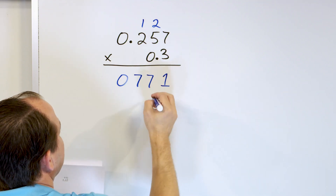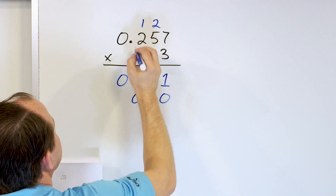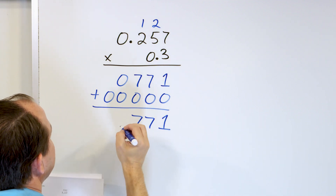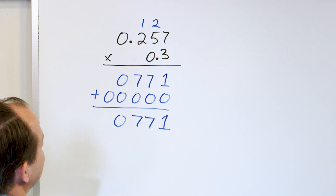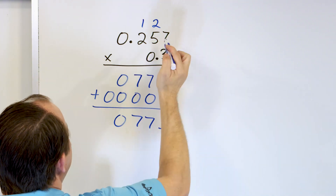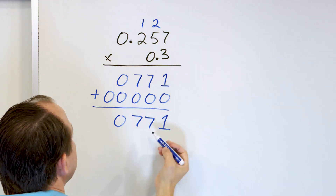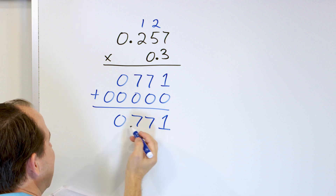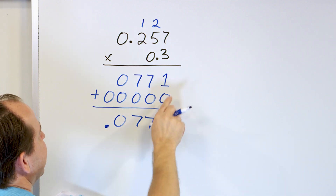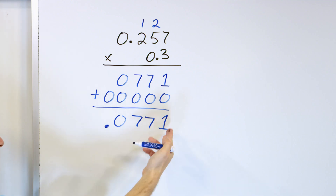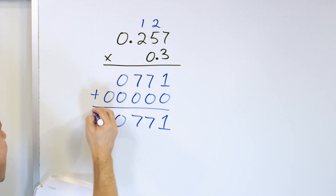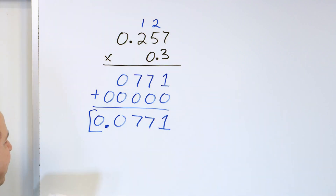Then I drop a 0 and multiply by 0: 0 times 7 is 0, 0 times 5 is 0, 0 times 2 is 0, 0 times 0 is 0 — doesn't do much. Adding gives us 1, 7, 7, and then a 0. How many decimal digits after the decimal? Three here and one here, for a total of four. So I need four digits after the decimal in my answer. The decimal point goes so that I have 0.0771.